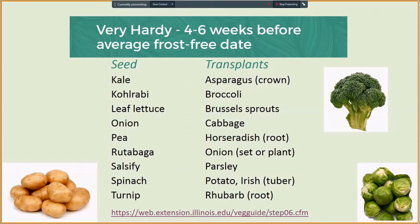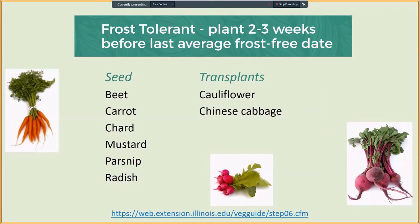Very hardy crops such as spinach, broccoli, cabbage, and the others listed on the slide, should be planted four to six weeks before your area's frost-free date. The University of Illinois Extension's Illinois Vegetable Garden Guide at web.extension.illinois.edu/vegguide/step06.cfm talks about planting times and gives you more information on how to plant these specific crops. Frost-tolerant crops such as beets, chard, radishes, and the others listed on this slide, should be planted two to three weeks before your area's frost-free date.